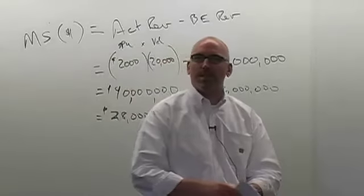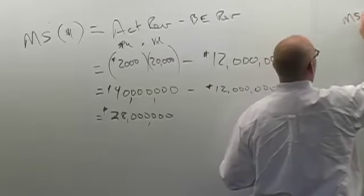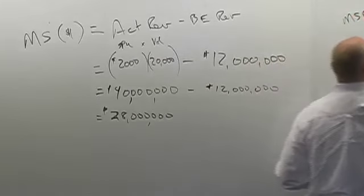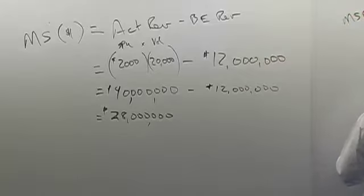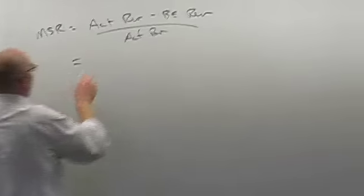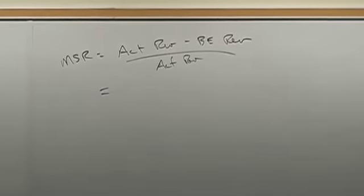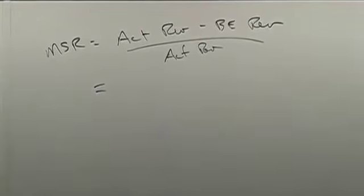Jennifer McCarty, what is the margin of safety ratio? Actual revenue minus break even revenue by actual revenue. Now, given that we've just calculated the margin of safety in dollars, this should be fairly straightforward. Right, Mike? Yeah. Give me a number.